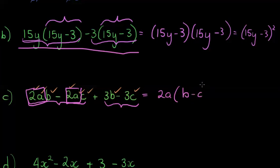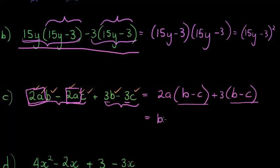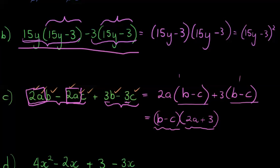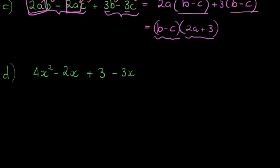For the other group, the common factor is just 3, so I have plus 3, and I'm left with B minus C as well. Now I see a whole bracket (B − C) is common to both groups, so I take that out as a common factor. Replacing it with 1 leaves 2a plus 3. So the expression factors as (B − C)(2a + 3) — the product of two factors.